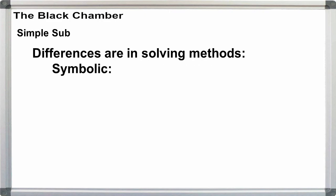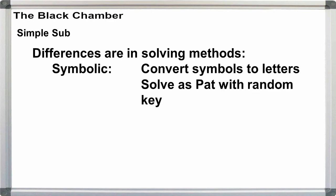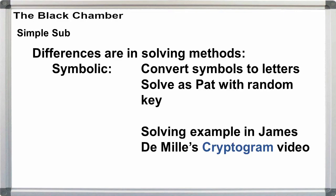If you're trying to solve symbolic substitutions, convert the symbols to randomly assigned letters. Then solve them as simple subs without divisions, and with a random key. I'll demonstrate this process in the upcoming video for James DeMille's cipher from cryptogram, a novel.